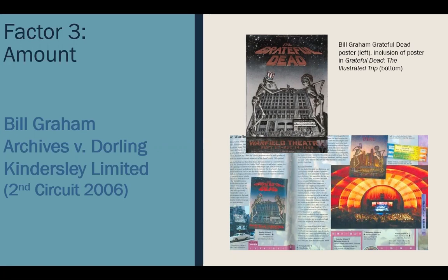The third factor is the amount and substantiality of the portion used. As in the Cariou case, it's looking at how much of the work you're using and whether that is reasonable given the transformative purpose. In this case, the entire image was used, but the images were reduced in size. By reducing them and pairing them with a timeline and intermingling them with text, it reduced the visual impact and the original artistic expression, and helped ensure readers see these images as historical artifacts. The court found this aligned with the transformative purpose.